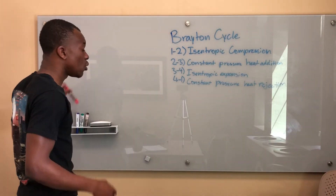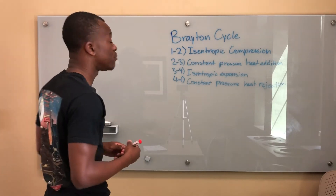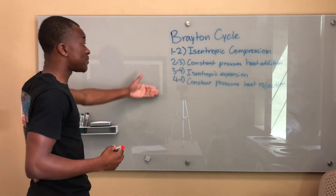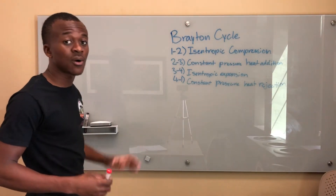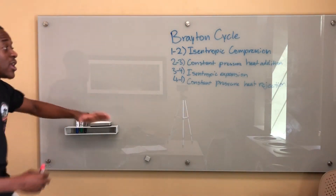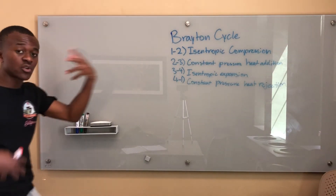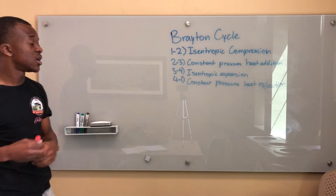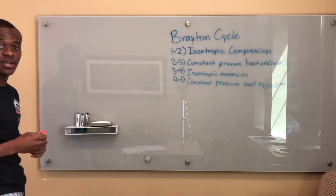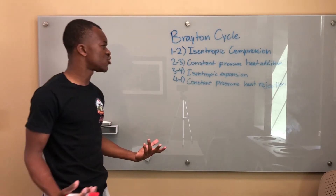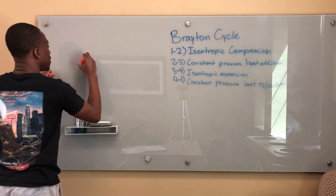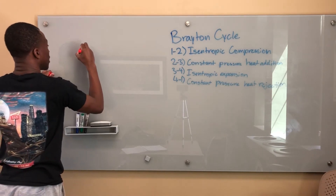There's also a diagram you should know associated with the Brayton cycle. I'll draw it here so you can see the thought process for what you need to draw. From one to two we have isentropic compression - what causes that? An isentropic compressor. So I'm going to draw a compressor starting from point one, with work going into the compressor.